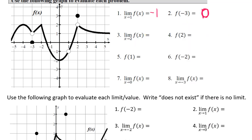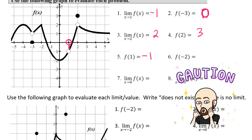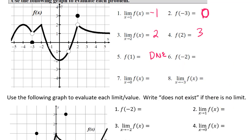For the limit as x approaches 2, on the left side and the right side, both meet at the value of 2. And f of 2 — that y value is 3. For number 5, f of 1: when the x value is 1, the y value looks like negative 1, but wait — there's a hole there. So it does not exist; it is undefined. Don't fall for that trap — a lot of people will. For number 6, f of negative 2: we've got a point up here, so f of negative 2 has a value of positive 2.